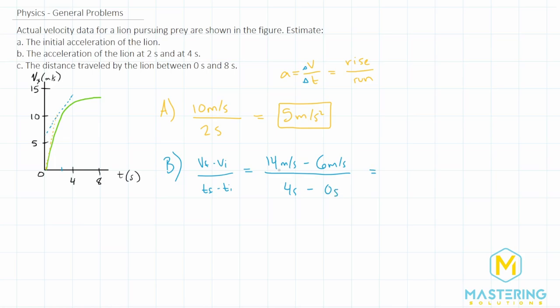And then we're going to divide that by four is our final time minus the initial time is zero seconds. So that gives us 14 minus six is eight meters per second divided by four seconds. So eight divided by four gives us two meters per second squared for the acceleration of the lion at two seconds.